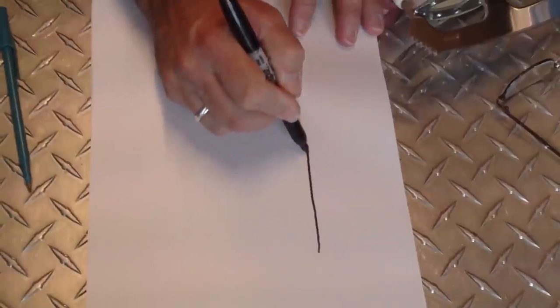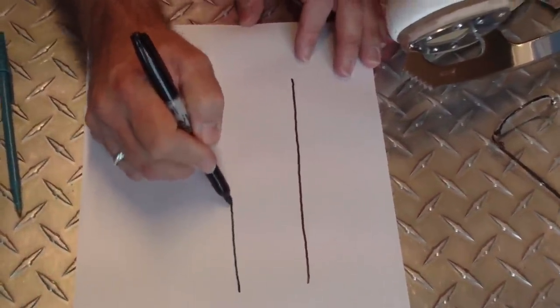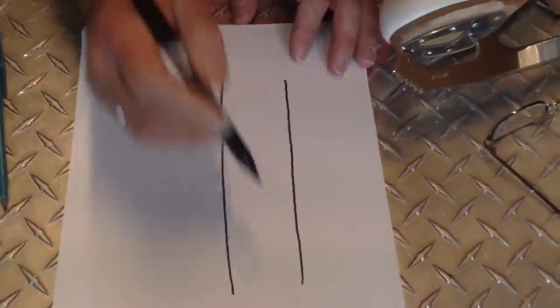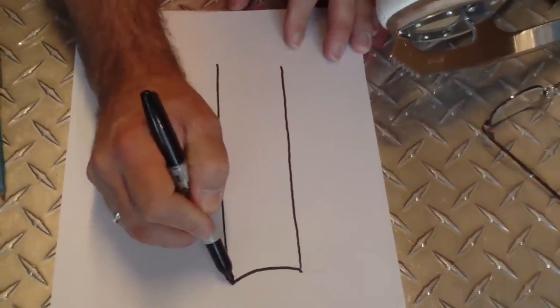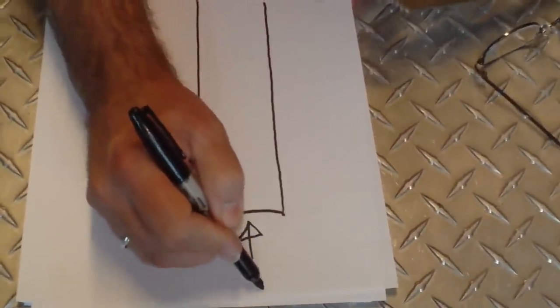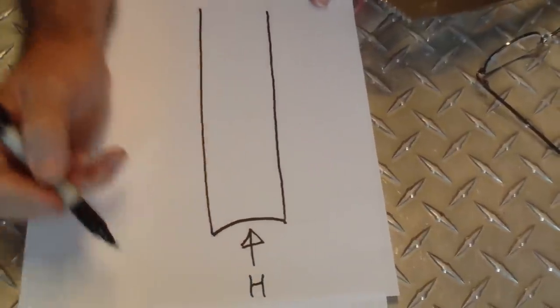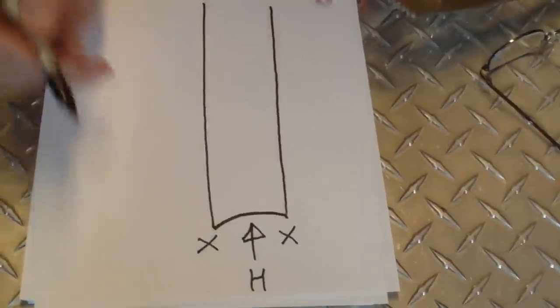Alright here we go. We're gonna pretend that I'm a good artist for the sake of this video. And I am making right now the world's fattest blade. This area here is the area that we call the hollow. This would be one edge and this would be the second edge.